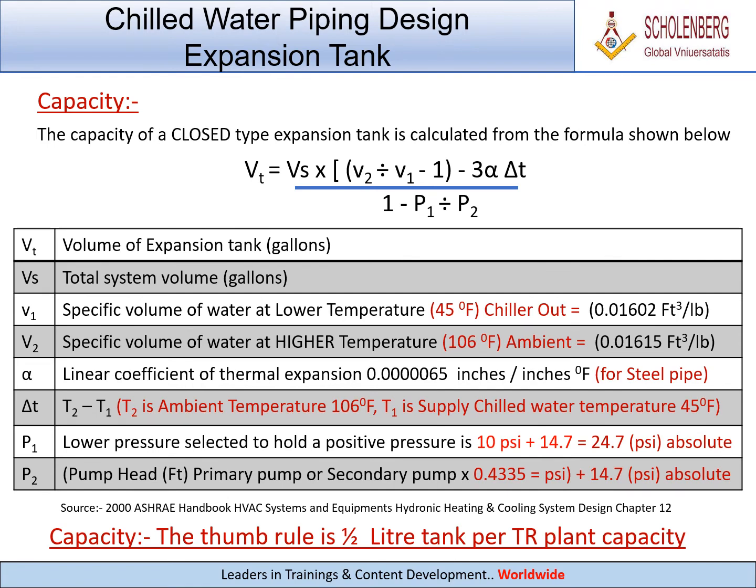Capacity. The capacity of a closed type expansion tank is calculated from the formula: Vt equals Vs multiplied by (V2 divided by V1 minus 1 minus 3 alpha delta T) divided by (1 minus P1 divided by P2). The thumb rule is 0.5 liter tank per TR plant capacity.